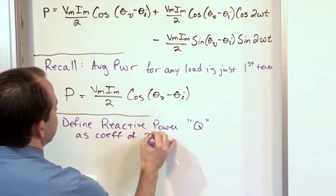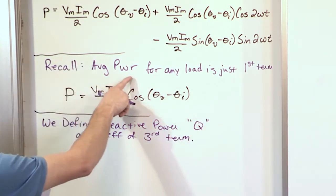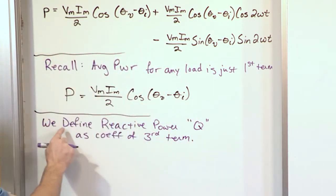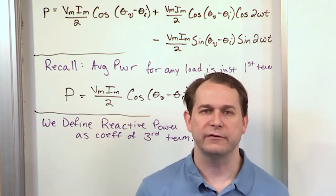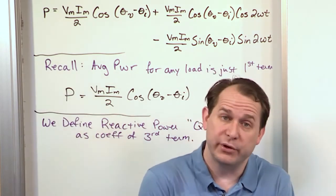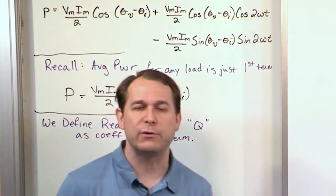Whereas the average power is capital P and that's just the first term, we're going to define the reactive power. The reactive power is what we've been talking about for capacitors and inductors this whole time. Now we're going to put a variable name to it: Q. Q is always from now on going to represent reactive power. So when you see Q, you need to start thinking about the capacitive or inductive load.